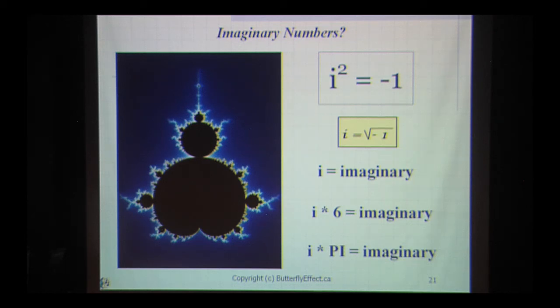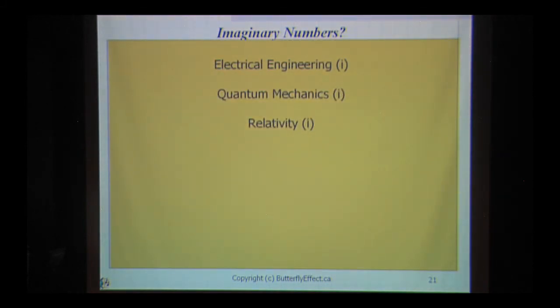In other words, any real number multiplied by the square root of negative 1, or i, is called an imaginary number. Interestingly, imaginary numbers seem to pop up all over the place and can be found littered throughout the equations used in electrical engineering, quantum mechanics, and Einstein's theory of relativity.